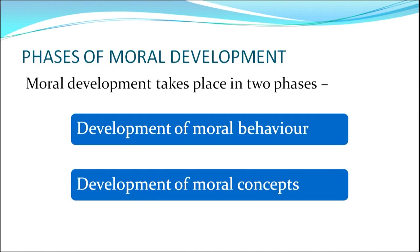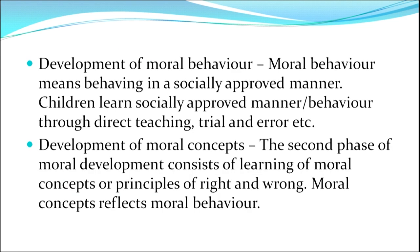The next aspect in moral development is its phases. Moral development takes place in two phases. The first is the development of moral behaviour, and the second is the development of moral concepts. Moral behaviour means behaving in a socially approved manner; children learn this through direct teaching or through trial and error. The second phase consists of learning moral concepts or principles of right and wrong, which reflect moral behaviour.